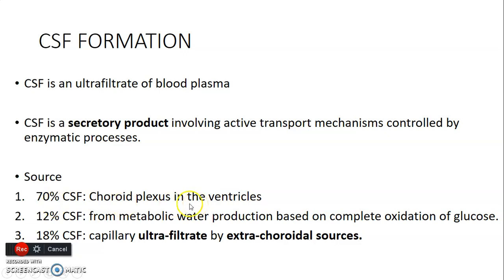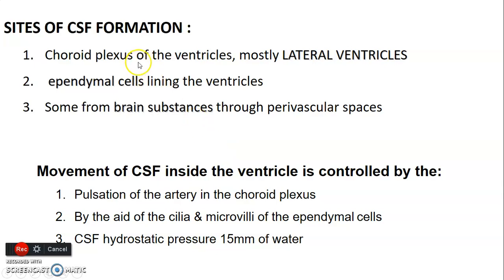Seventy percent of CSF comes from the choroid plexus, 12% from metabolic water production based on complete oxidation of glucose, and 18% is capillary ultrafiltrate from extrachoroidal sources. CSF is mainly formed by the choroid plexus of the lateral ventricle, particularly the anterior and inferior horns, located on the floor of the lateral ventricle. The third ventricle's choroid plexus on its roof also contributes, as do ependymal cells lining the ventricles, and some CSF comes from brain substance through perivascular spaces.